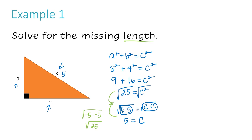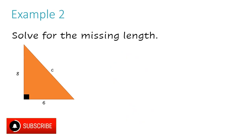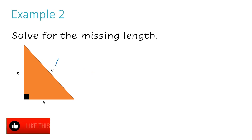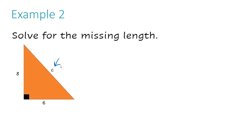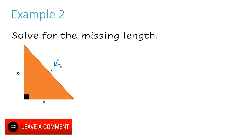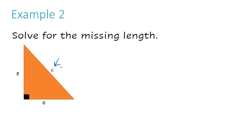Let's take a look at example number two. I have another right triangle, and this time it's again the hypotenuse that is unknown — represented by the letter C. A and B are my legs. My formula is a² + b² = c². I'll write 6 for A and 8 for B: 6 squared plus 8 squared equals C squared.